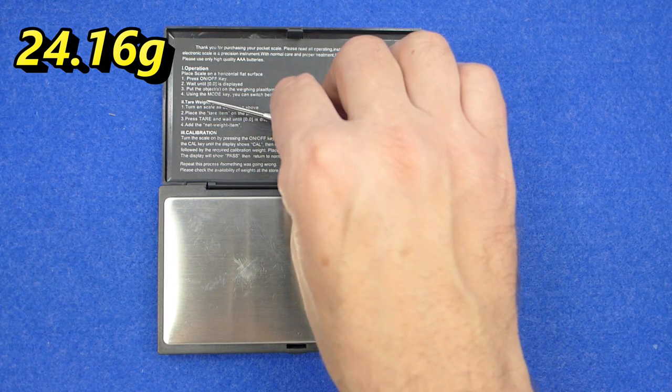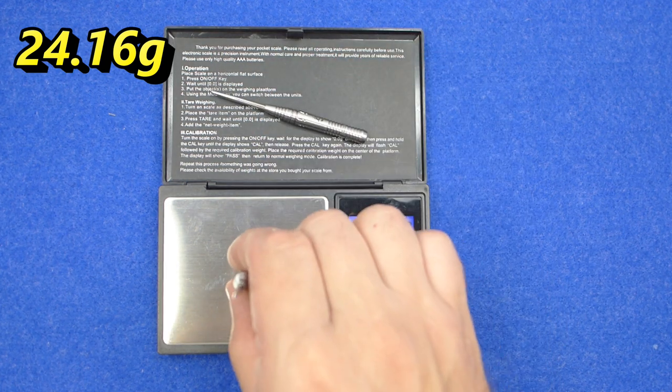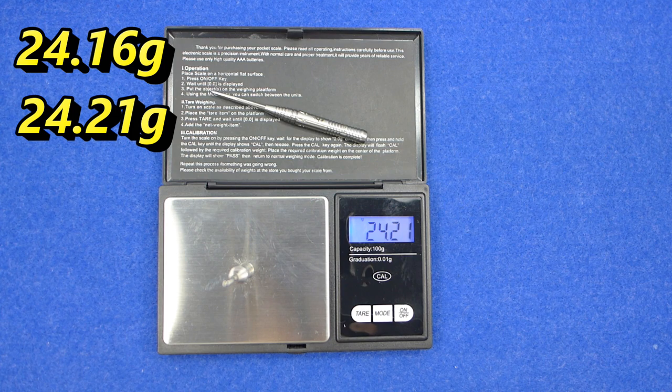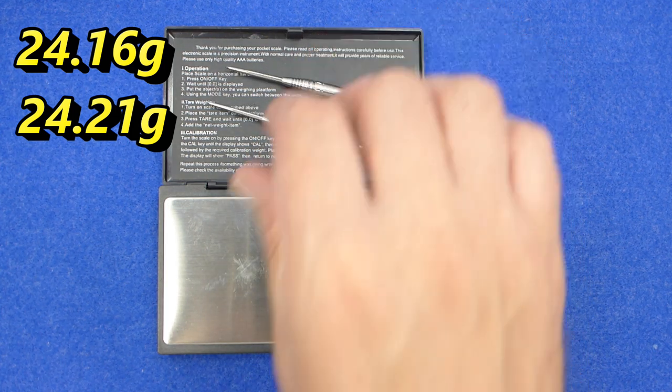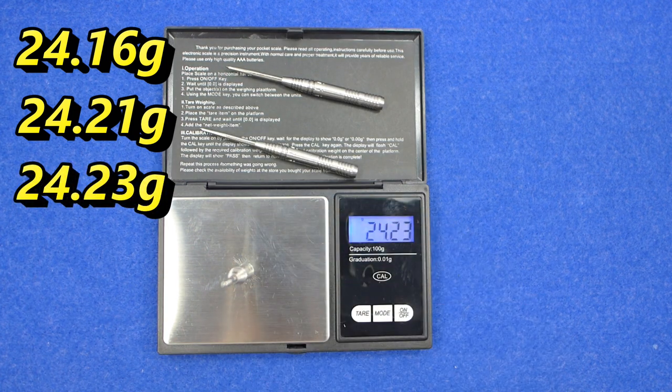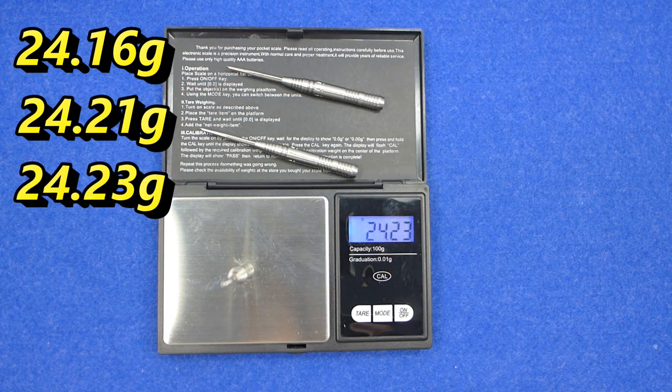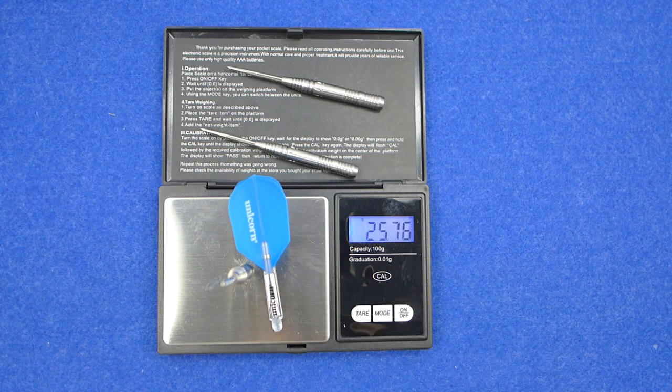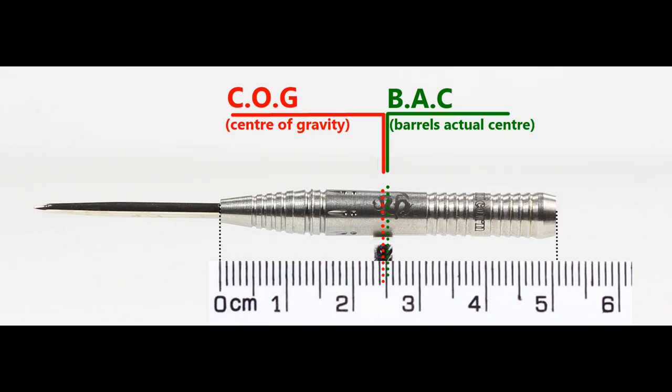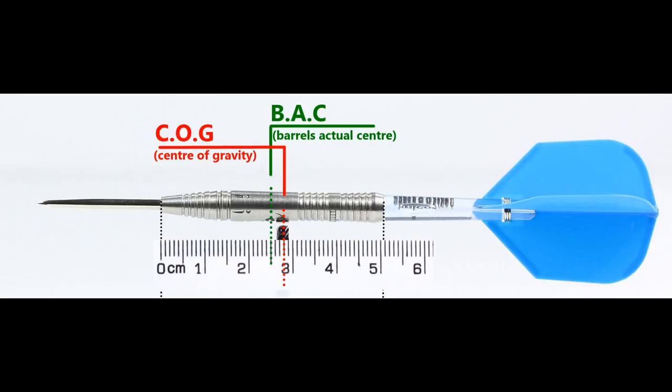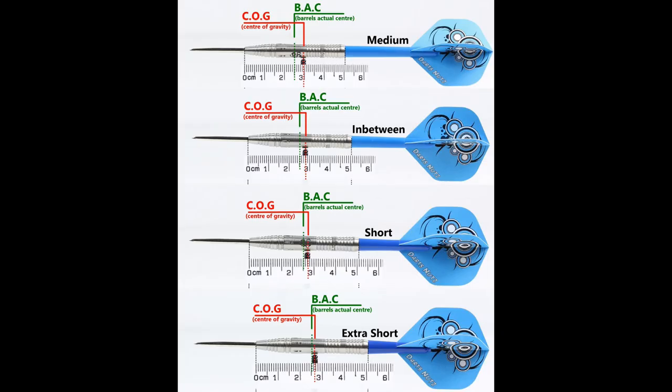24.16 grams. 24.21 grams. And 24.23 grams. And the full setup is 25.73. With nothing attached the balance is pretty much in the center and with the supplied setup it moves slightly behind the center point. And this is the balance with medium, in between short, extra short stems and standard flights.